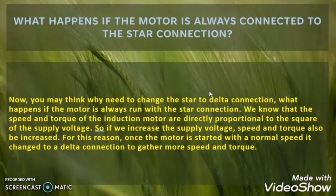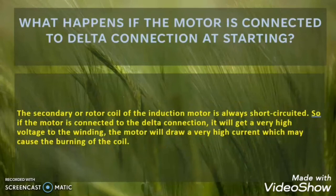Now another question arises: can we run the motor throughout in the delta configuration, without starting in star at all? No, in that case also the problem will not be solved. As I told you, in the delta configuration the voltage across the winding is the rated voltage. Due to the rated voltage there will be a huge current in the winding, which will result in a high inrush current at the time of starting. So the problem remains the same.